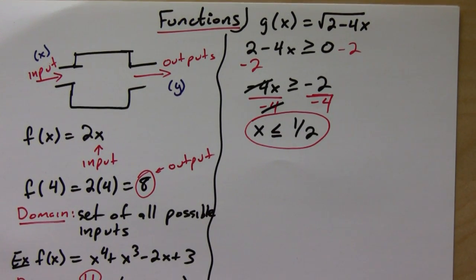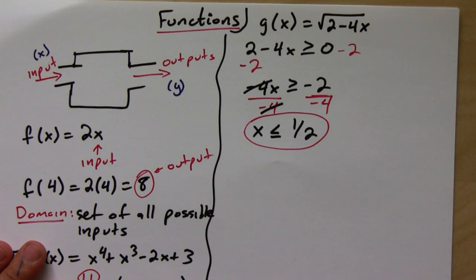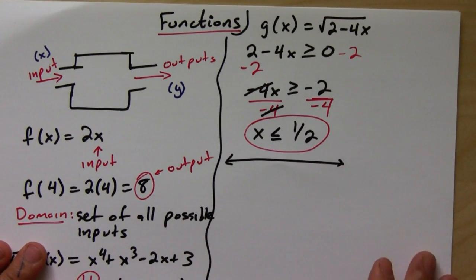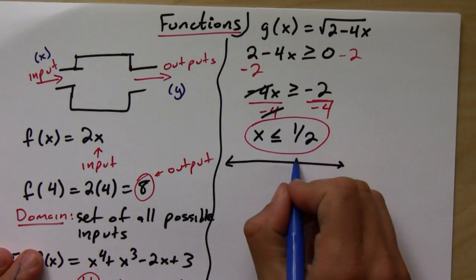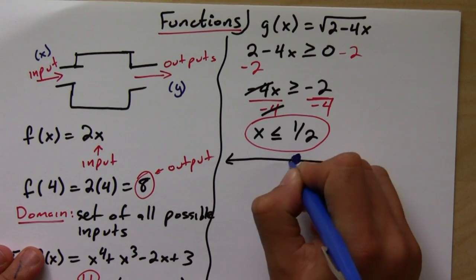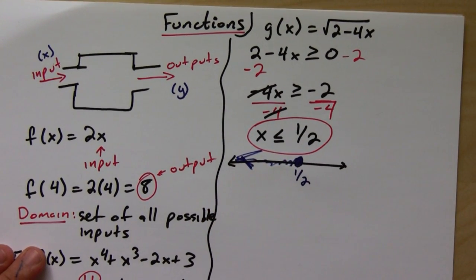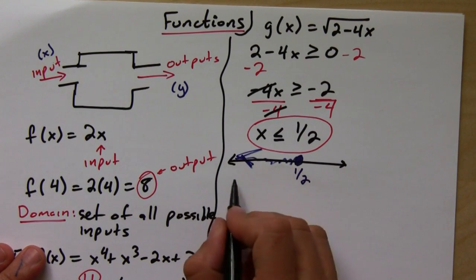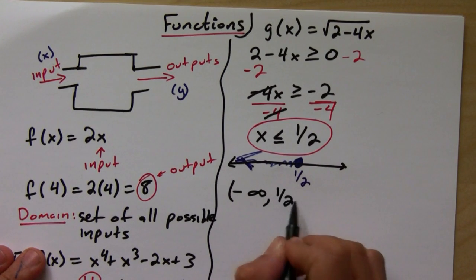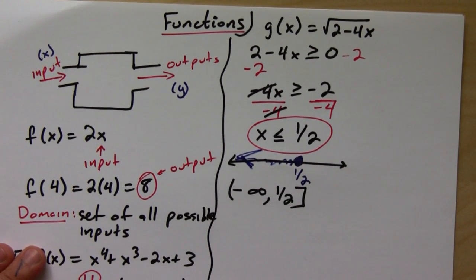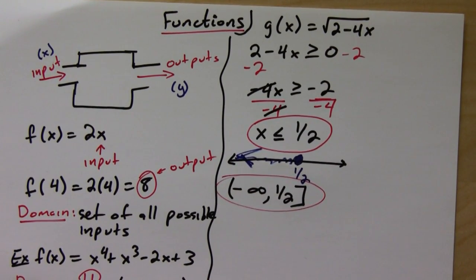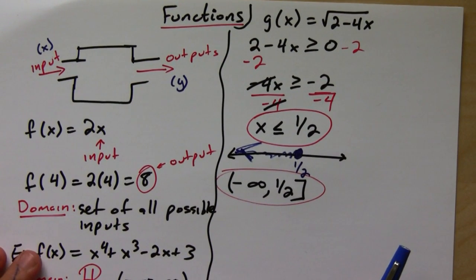Okay. So then, to write this in interval notation, let's draw a number line real quick. And let's put down the number 1/2. So it's less than or equal to 1/2, so that means it includes 1/2 and I'm going to go left. So this tells you that you're going all the way from negative infinity, which always has parentheses, all the way up to 1/2. And since 1/2 is included, use a bracket. And this is the domain of this function, g(x).